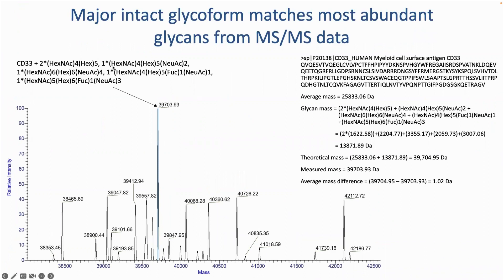Taking the mass of the six most abundant glycans at each site and adding it to the average mass of the protein sequence gives a theoretical mass of the major glycoform from the bottom-up data. Our theoretical mass was 39,704.95 Da, and the base peak of the major glycoform measured was 39,704 Da — an average mass difference of approximately one Dalton, which is quite acceptable when comparing average mass values.